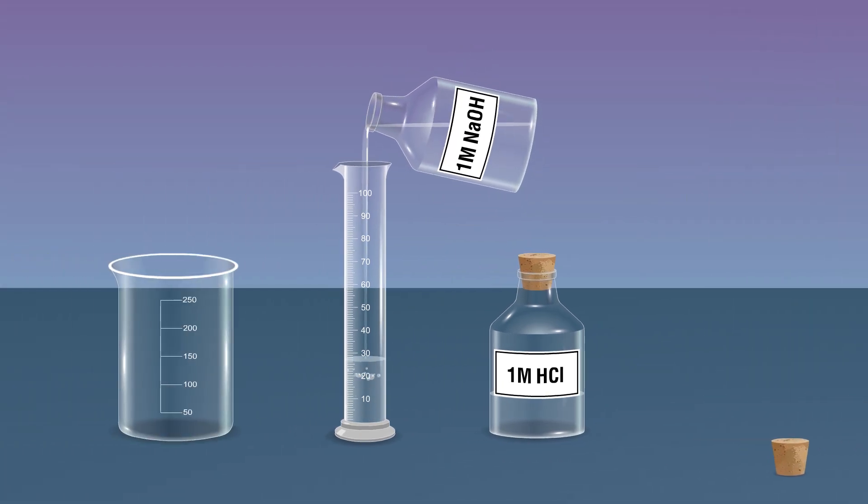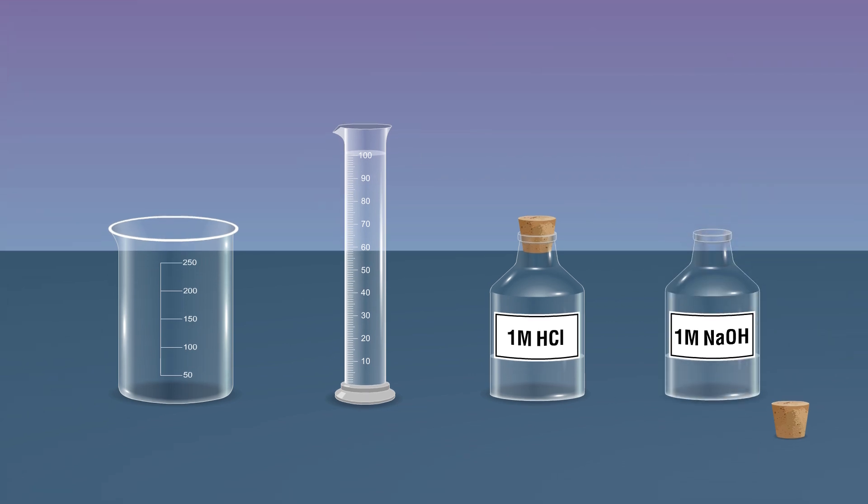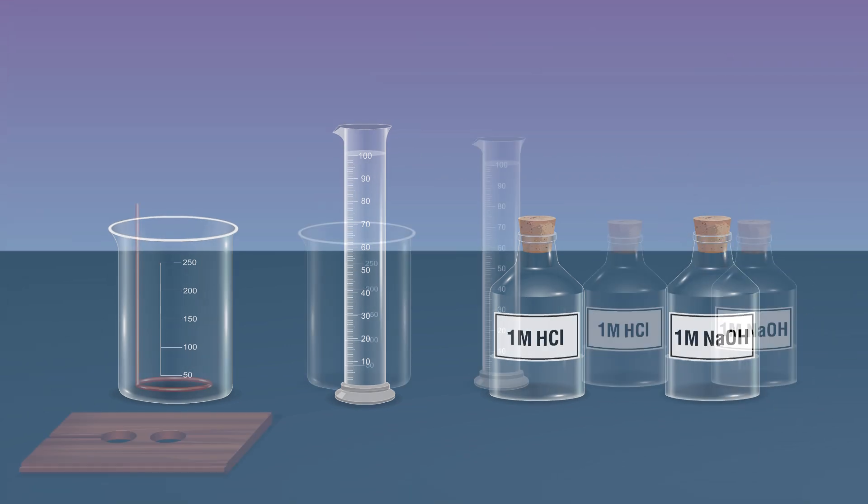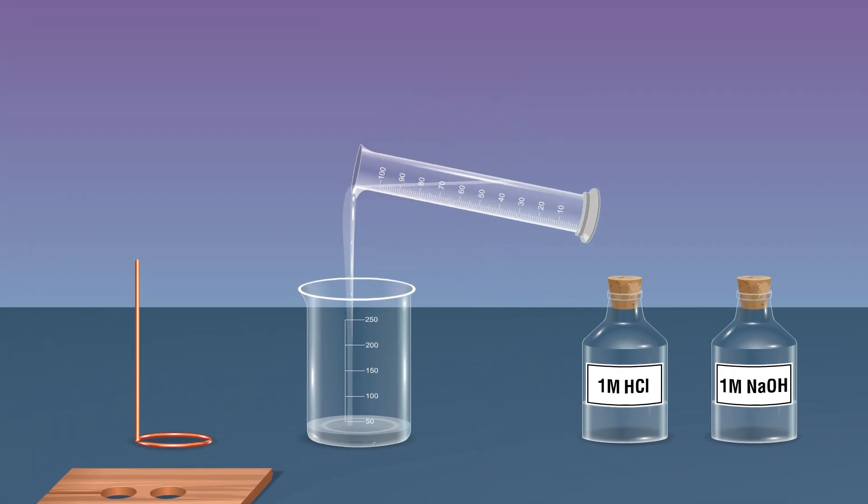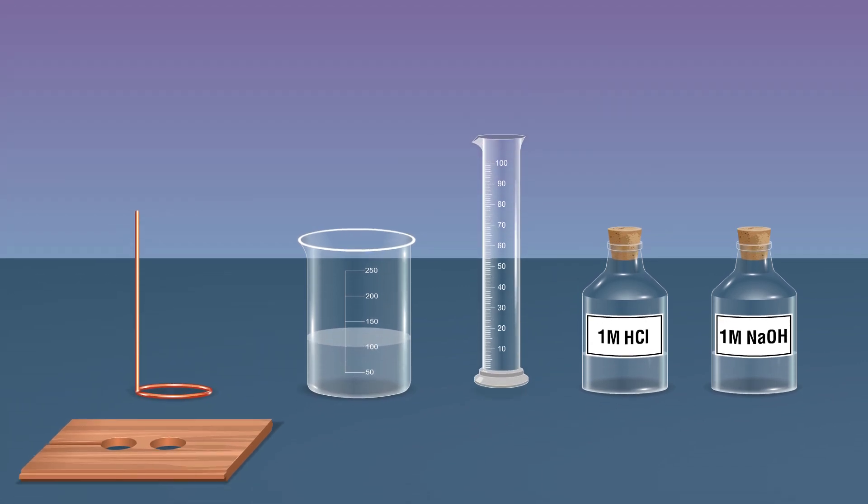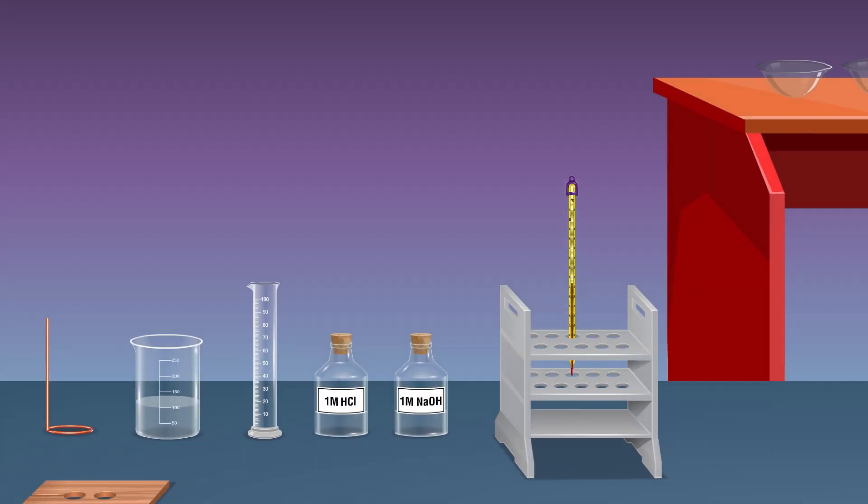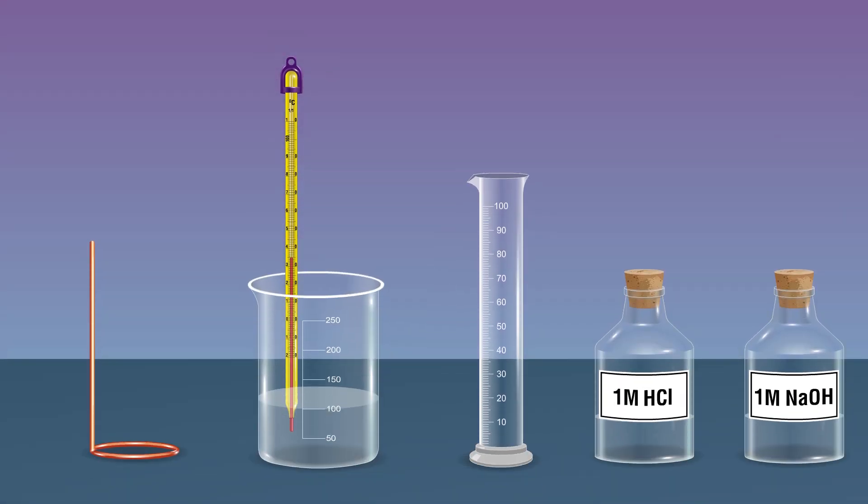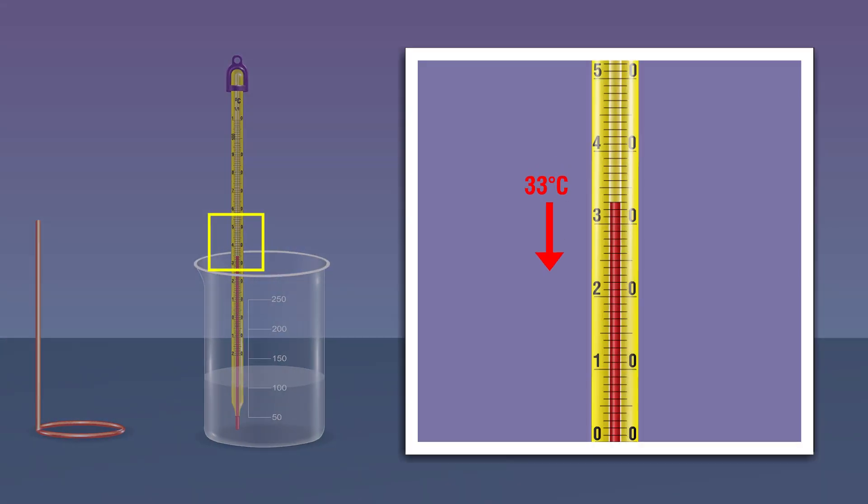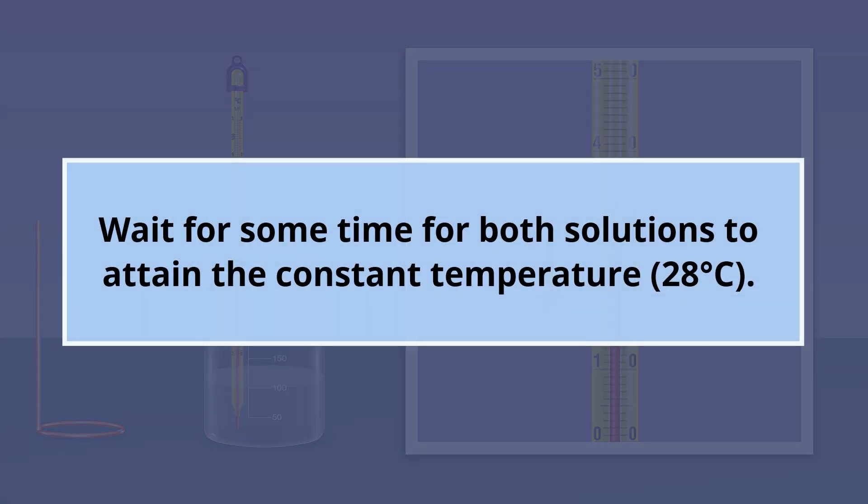Transfer 100 milliliters of 1 molar sodium hydroxide solution into a 250 milliliter beaker using the measuring cylinder. Measure the initial temperature of the base sodium hydroxide and record the data, same as T1 degrees Celsius. Wait for some time for both solutions to attain the constant temperature of 28 degrees Celsius.